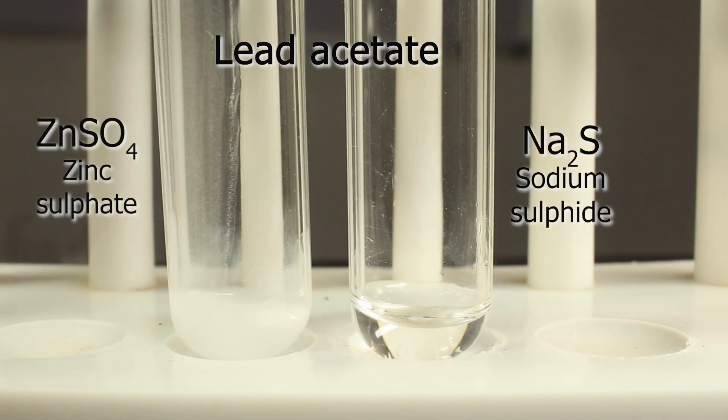Here, white precipitate is formed with sulfate, but it's insoluble lead sulfate, expected.